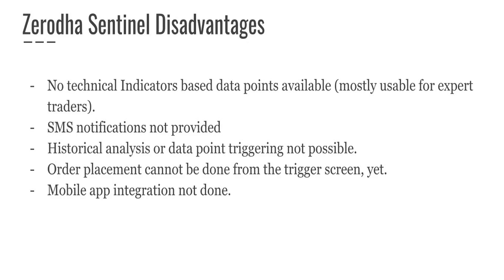Some concerns to be aware of: there are no technical indicator-based data points, so expert-level traders may hit a wall quickly. SMS notifications are not available — only email and web app notifications. Historic analysis is not available, and there are no data points triggering that provision currently. Order placement cannot be done directly; even when an alert triggers, you must manually place your order. Automated trading may come later. Mobile app integration is not available — it is only integrated with the Zerodha Kite web-based trading platform.